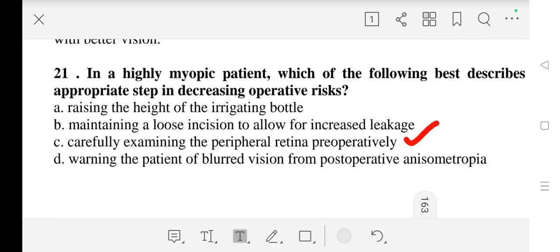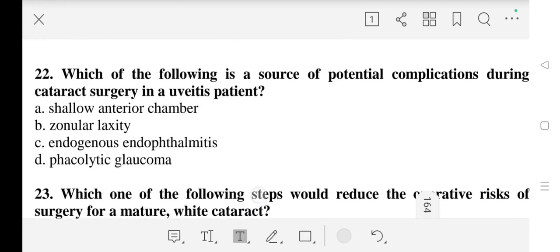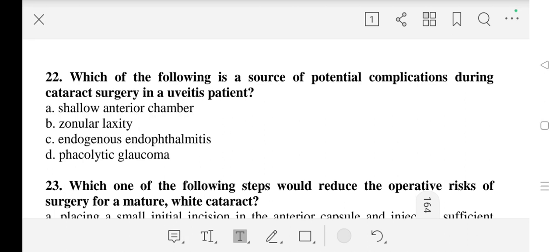Question number 22: Which of the following is a source of potential complication during cataract surgery in a uveitis patient? Our correct answer is B - zonular laxity.